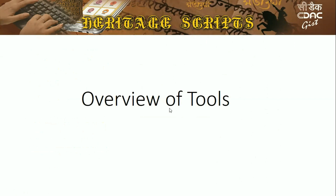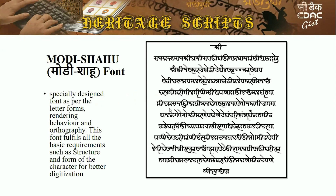Moving to the overview of tools: these tools have been developed by CDAC and provided as part of a single application for digital archiving and preservation. The first tool is the Modi Shahu font, a specially designed font based on the letter forms, rendering behavior, and orthography of Modi. This font fulfills all basic requirements for structure and form of characters for better digitization and is based on Unicode — the Unicode code block for Modi is U+11600.